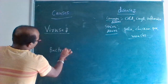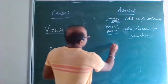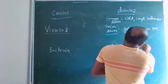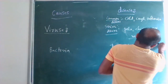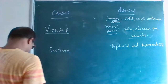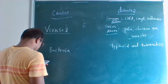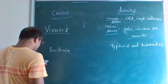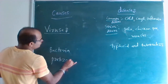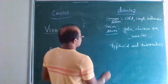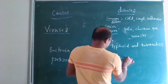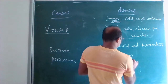Next, bacteria cause typhoid and tuberculosis. After that, protozoa cause dysentery and malaria.